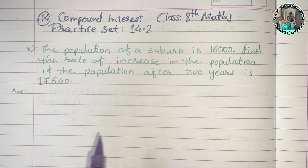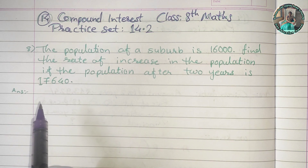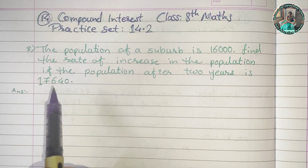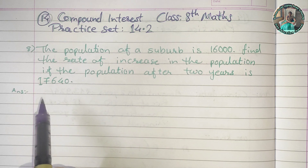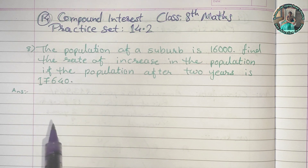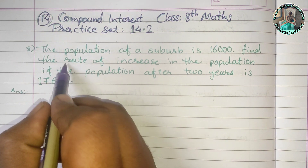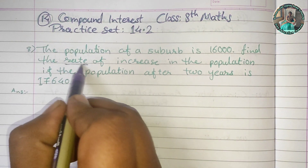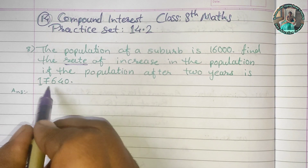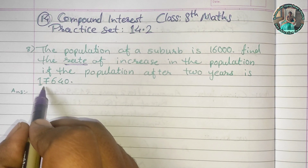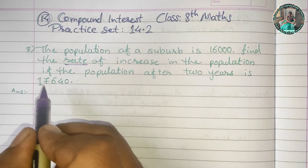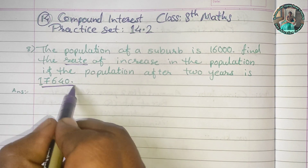In this case, we are going to find out the principal amount. After compound interest, we are going to find out the final amount. But if we are going to find out the rate, we need the population after 2 years.